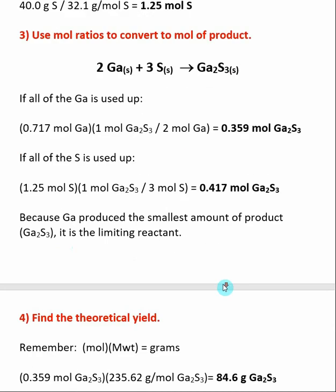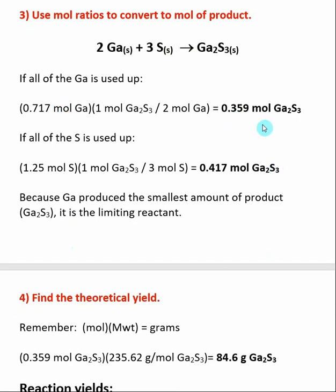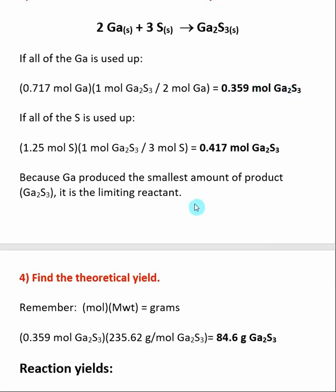We then compare the two results and ask which reactant produces the smallest amount of product. Between 0.359 and 0.417, the value 0.359 is smaller, so this tells us that gallium is the limiting reactant, and the amount of product we can make is 0.359 moles of gallium sulfide. We've now determined the limiting reactant, and next we want to find the theoretical yield.